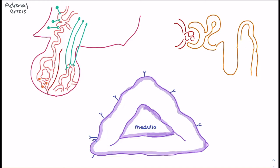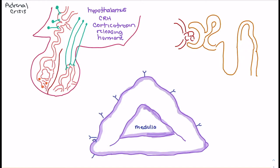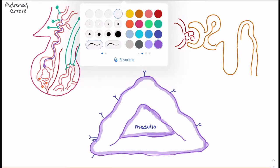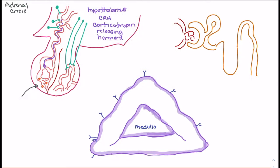When we have a reduction in mineralocorticoids or glucocorticoids, the hypothalamus will respond. We initially see a response by the hypothalamus, which uses these nerves to release CRH, also known as corticotropin-releasing hormone. That CRH is released into the blood supply and travels down to impact the anterior pituitary gland.